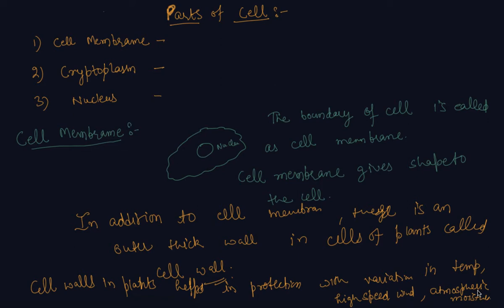So till now we have discussed about cell membrane, and there is one more thick layer called cell wall found in plants, which acts as a protection layer. Now we will discuss about cytoplasm.